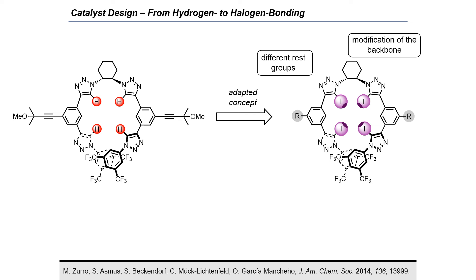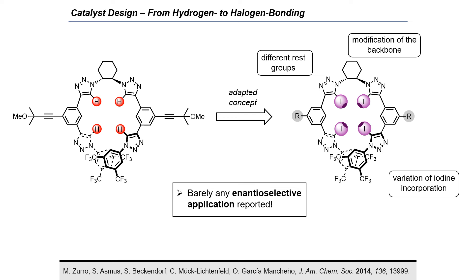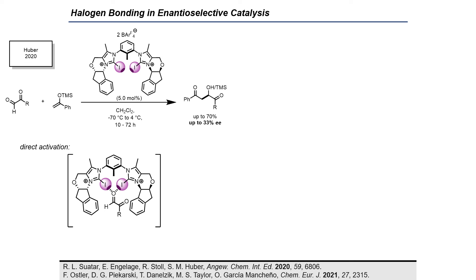Our goal was to find enantioselective applications based on halogen bonding catalysis because there are barely any reported yet. The first enantioselective application was reported by the group of Huber in 2020.